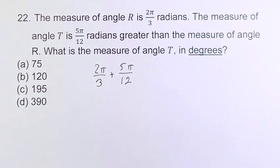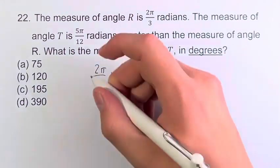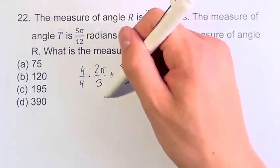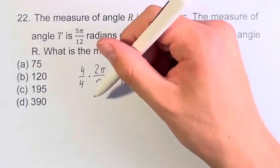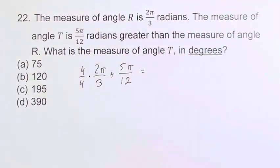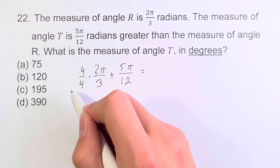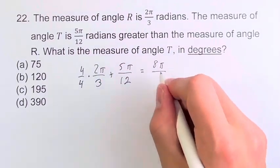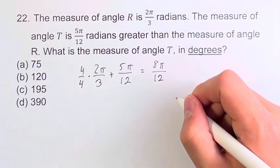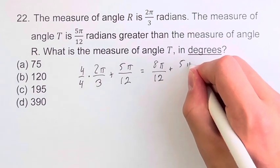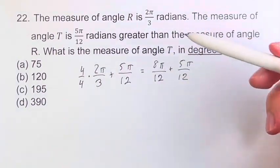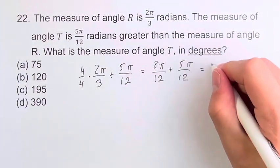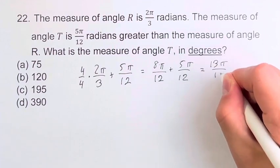We want to simplify this, so we want to get a common denominator. We multiply this fraction by 4 over 4. 4 divided by 4 is just 1, so we're multiplying by 1. It doesn't actually change the value of the angle, but if we multiply them across we have 4 times 2 is 8—don't forget the π—over 4 times 3 is 12. This is plus 5π over 12. Now we have two fractions with a common denominator and we can just add the numerators. So 8π plus 5π is going to give you 13π over 12.